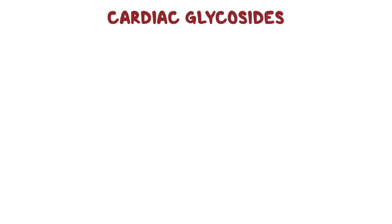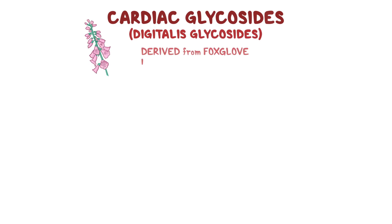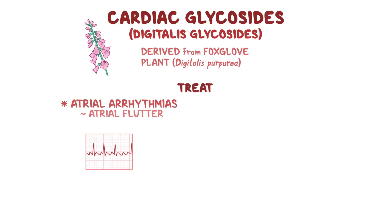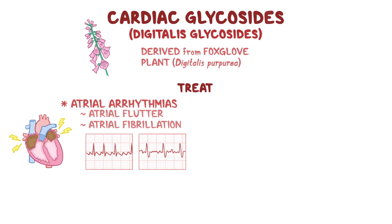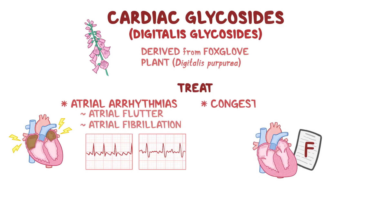Cardiac glycosides, also called digitalis glycosides, are medications derived from the foxglove plant, digitalis purpurea. They are commonly used for the treatment of atrial arrhythmias, such as atrial flutter and atrial fibrillation, which are caused by rapid, uncoordinated contractions of the atria. In addition, cardiac glycosides can be prescribed for congestive heart failure when other medications fail.